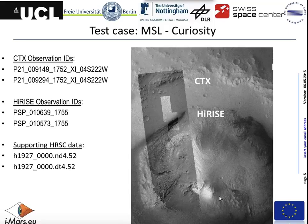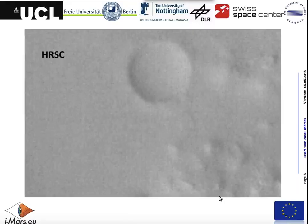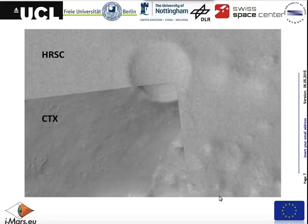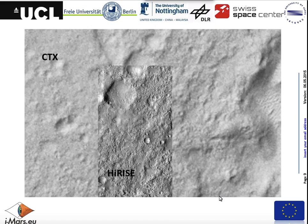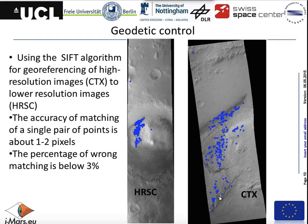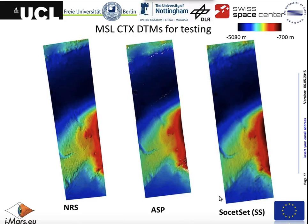This is showing one of the test sites, the MSL test site, showing CTX and HiRISE on top of HRSC. You can see how HRSC and CTX are slightly misaligned but practically they are okay. This is showing that HiRISE is misaligned with CTX even much more, so this should be adjusted first in the system. This is done by using image recognition and pattern recognition, creating a lot of reference points in HRSC with respect to CTX and then aligning CTX to HRSC.